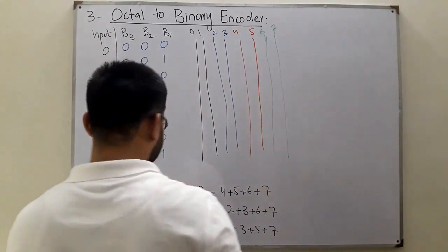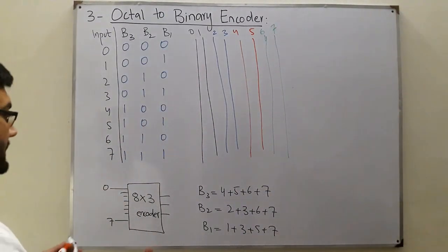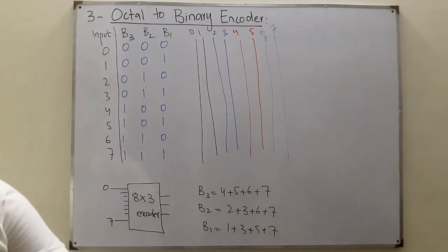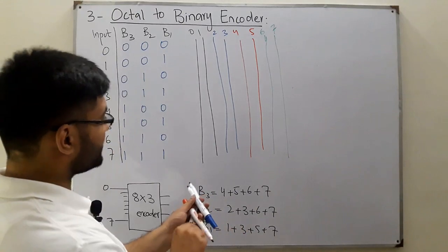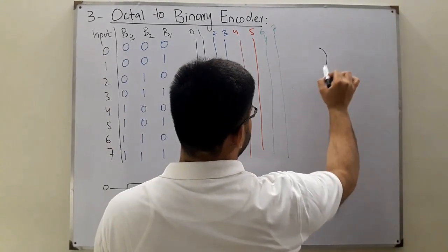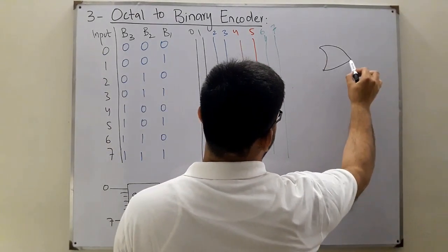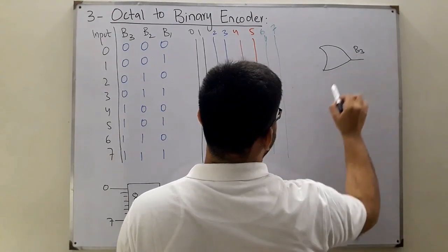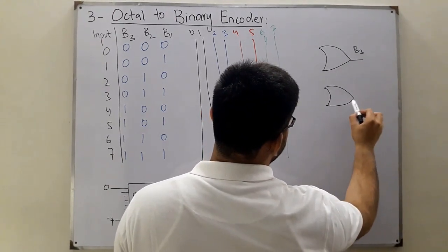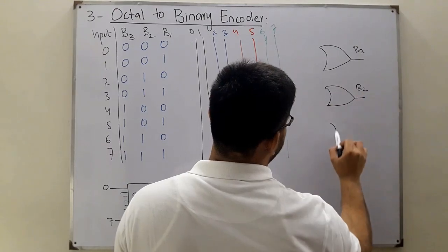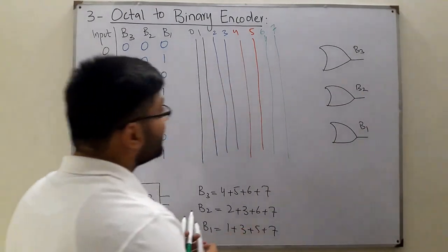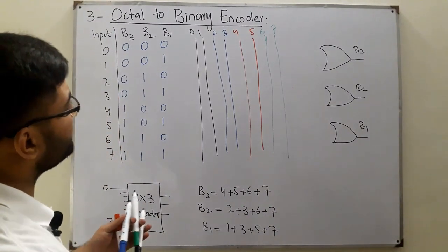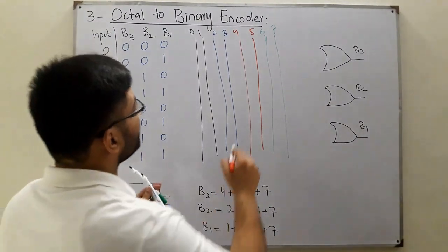Now you require OR gates. Which color? Let's say black. This is your most significant bit, which is b3, then you have b2, and finally the least significant bit b1.